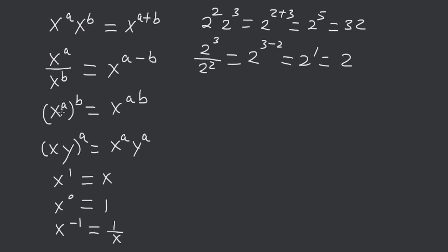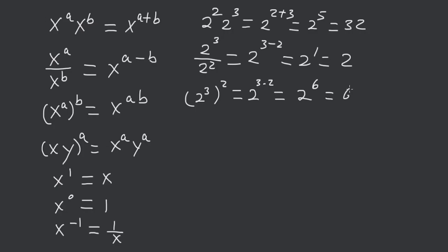If you have x to the a, all to the b, you have x to the a times b — these multiply across. So you have 2 cubed squared is equal to 2 to the 3 times 2, is equal to 2 to the 6, which is equal to 64.